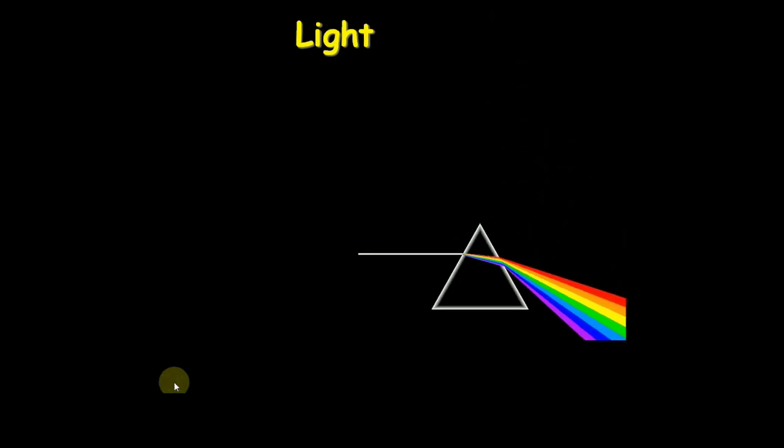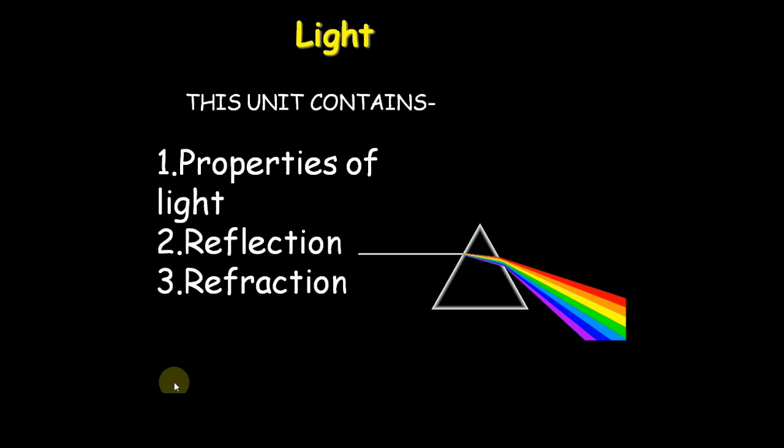What is meant by light? You are seeing the prism. This unit contains properties of light, reflection and refraction.